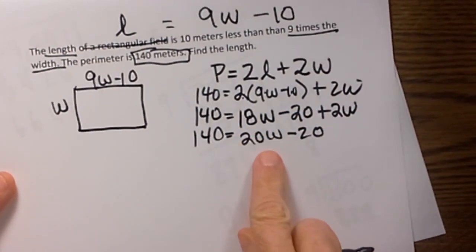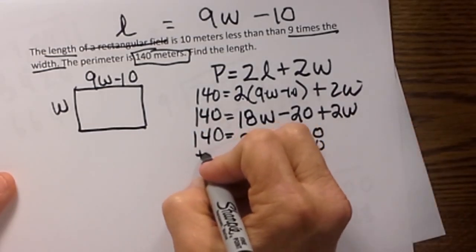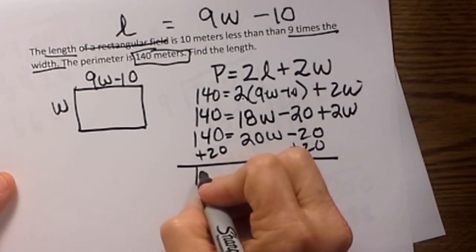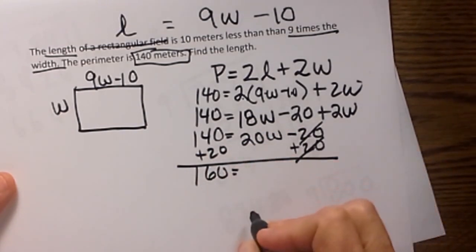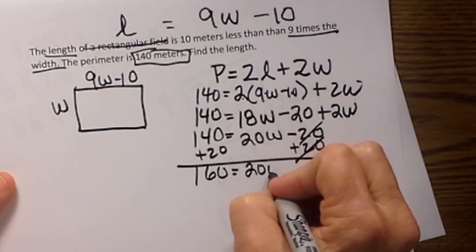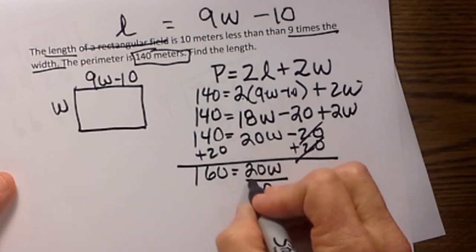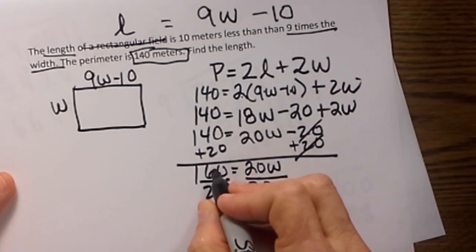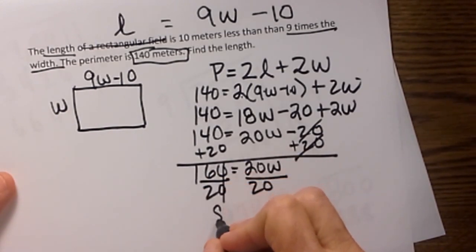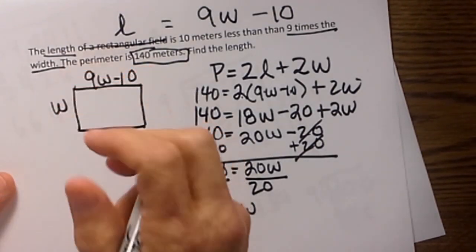Now we need to get the W by itself to solve. So we are going to add 20 to both sides so we can isolate that W. And that gives us 160 is equal to 20W. Divide both sides by the coefficient in front of the variable. So we get 16 divided by 2 which is 8. So our width is 8.